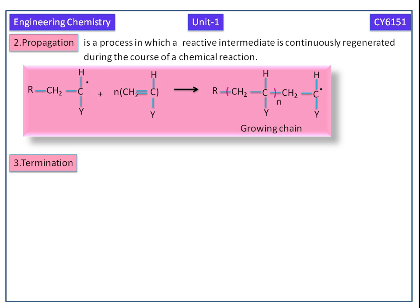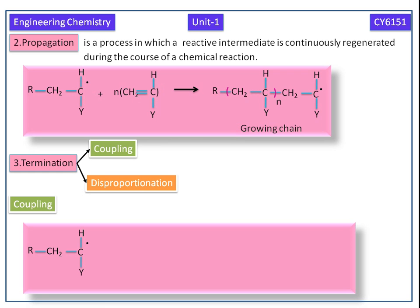This growing chain polymer at last comes to the end by termination. This termination occurs by either coupling or disproportionation. This is one chain end of the growing polymer. This bulky group we can consider as R. This is another chain end of the growing polymer. These two polymer radicals combine to give the saturated macromolecule.